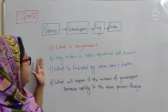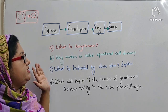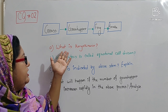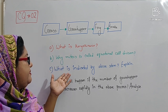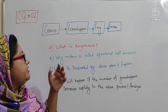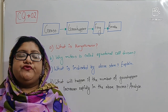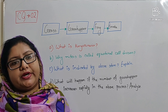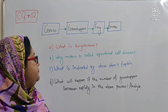Now in this stem or creative question, you can also see that there are four segments: knowledge-based, comprehensive, applied-based, and higher efficiency. The first question is: what is karyokinesis? The process of division of the nucleus is known as karyokinesis. It is also from chapter 3.